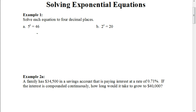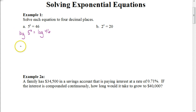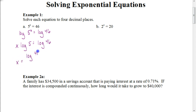Once the base is by itself, we're going to take the logarithm of both sides. Remember, with an equation, you can do anything as long as you do the same thing to both sides. We can take the log of both sides. And from the previous video, one of the properties said that if we have an exponent for a value, we could take that exponent and put it in front of the logarithm. So it would be x times the log of 5 equals the log of 46. To solve for x, we're going to divide both sides by the log of 5 to get x equals the log of 46 divided by the log of 5.